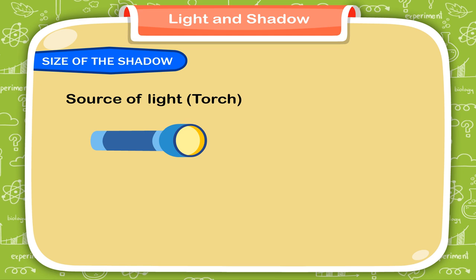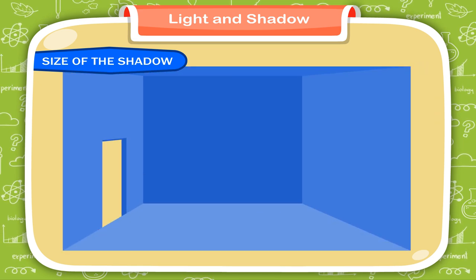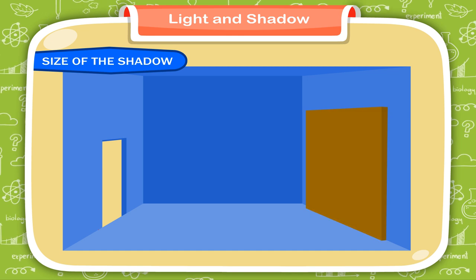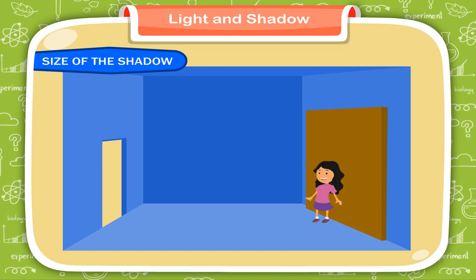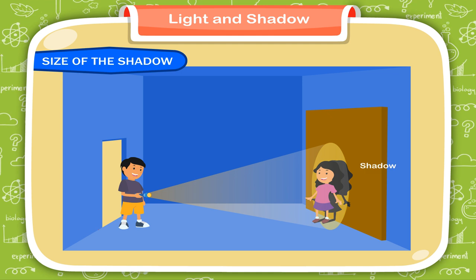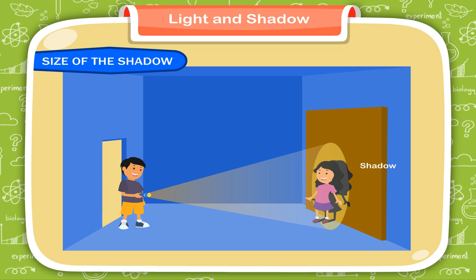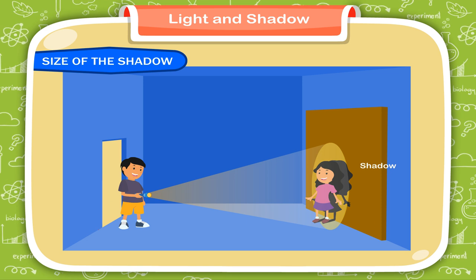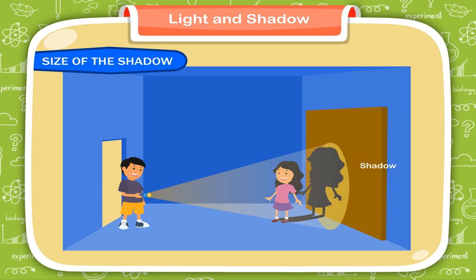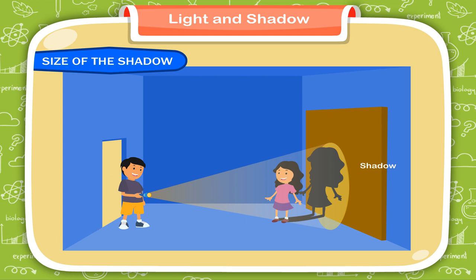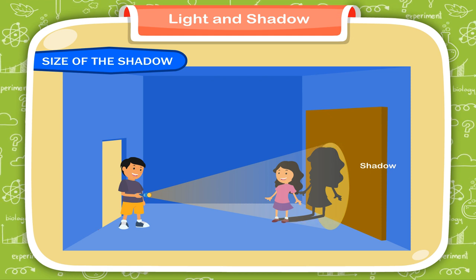Take a source of light and a cardboard screen. In a dark room at night, place a cardboard screen at one corner of the wall. Ask your brother or sister to stand in front of the cardboard screen and allow the light from a torch to fall onto them. You can see the shadow on the cardboard screen, and the size of the shadow is equal to the size of your brother or sister. Now ask your brother or sister to slightly move forward from the cardboard screen — you can see that the size of the shadow is now larger than their actual size.